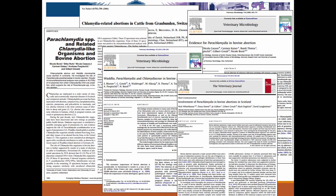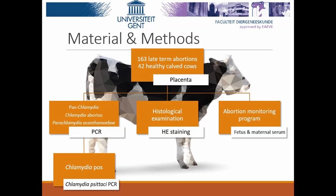Based on those papers, we designed a study to find out if chlamydia and chlamydia-like organisms are of importance in Belgium and Flanders. We took the first 163 consecutive late-term abortions from the abortion monitoring program, performed the standard monitoring analysis, and also took placental samples for a pan-chlamydia PCR, a PCR for Chlamydia abortus, and a PCR for Parachlamydia acanthamoebae. We also did histological examination of the placenta, and if the pan-chlamydia PCR was positive, a specific PCR for Chlamydia psittaci. As a control group, we took 42 healthy calved cows and performed the same PCR and histological analyses on their placentas.